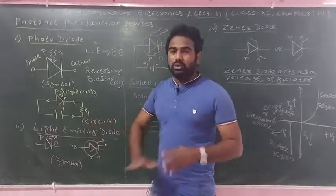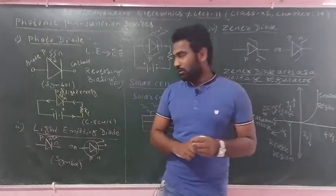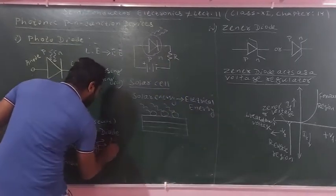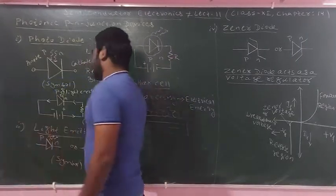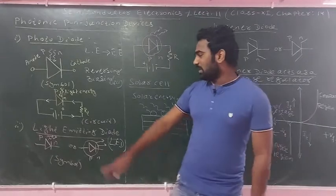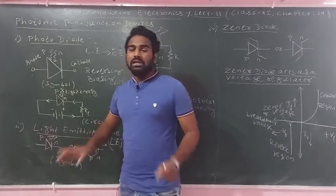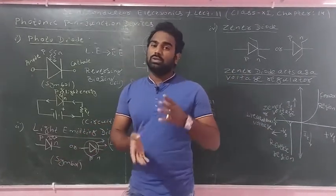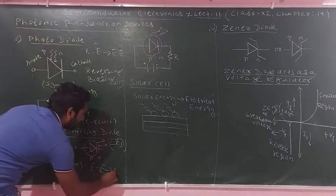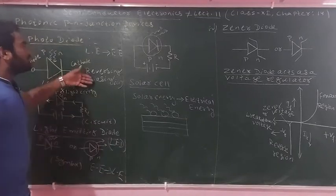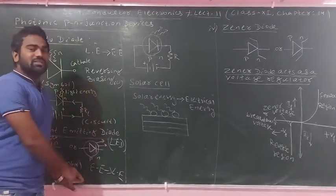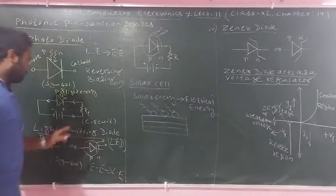The first device is the photodiode with reverse biasing. The second device is the LED — the light emitting diode. The LED converts electrical energy into light energy. The LED symbol shows the direction of light emission.